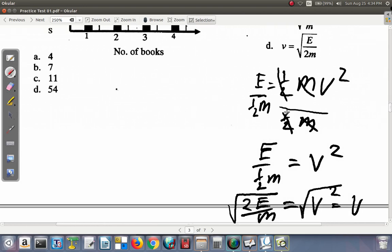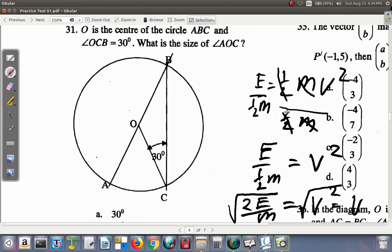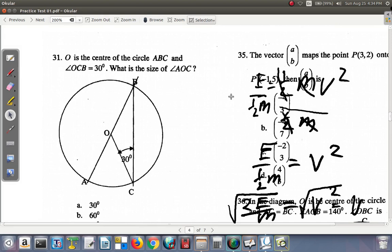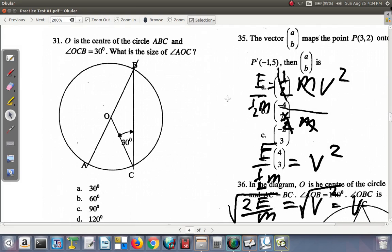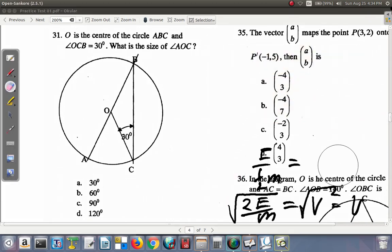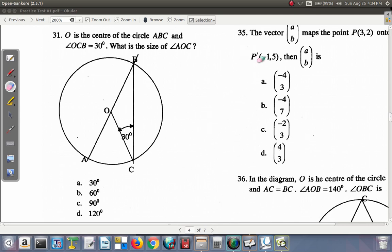Let's look at question 31. It should be somewhere down here. We have to zoom out a bit to see all of question 31. Let me just erase this over here. O is the center of the circle A, B, C. That's the circle.